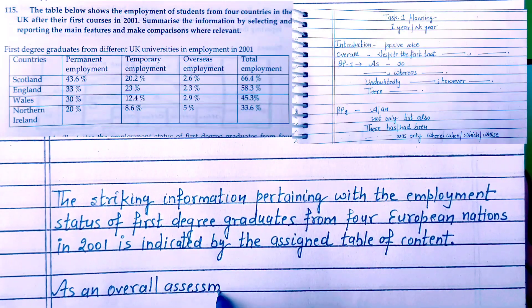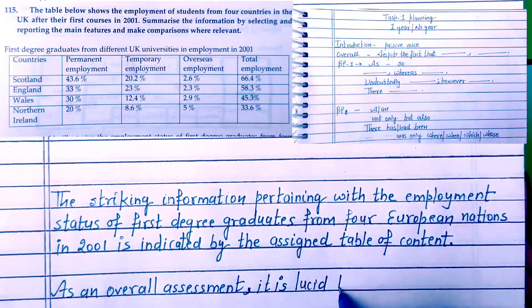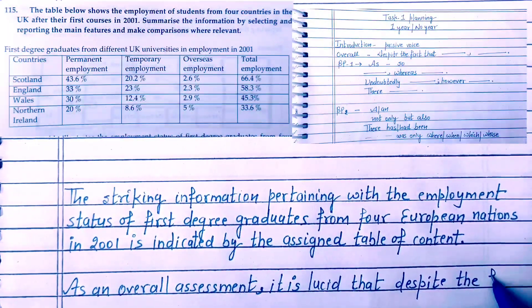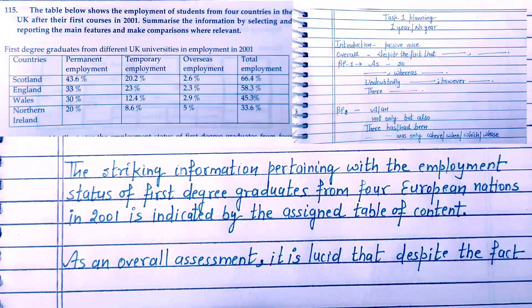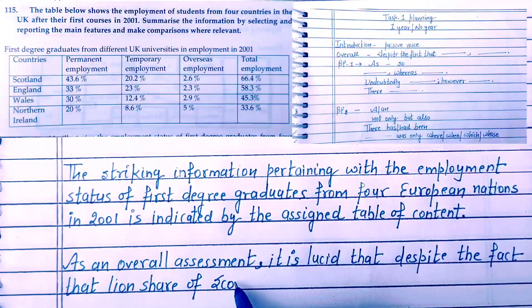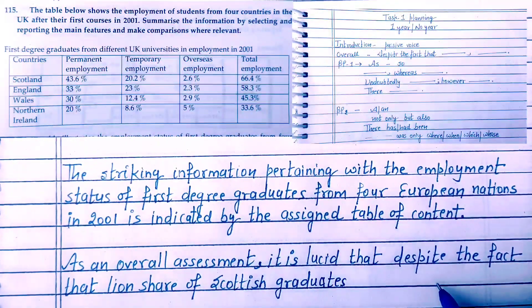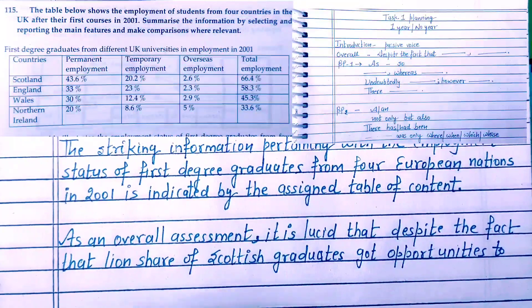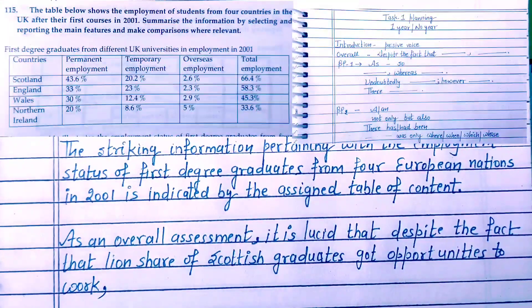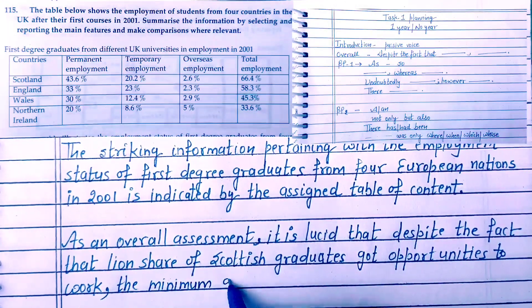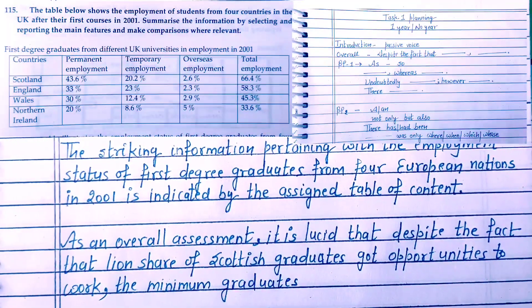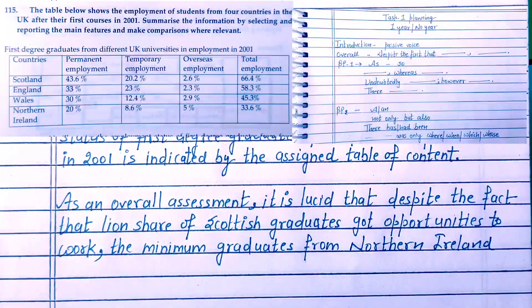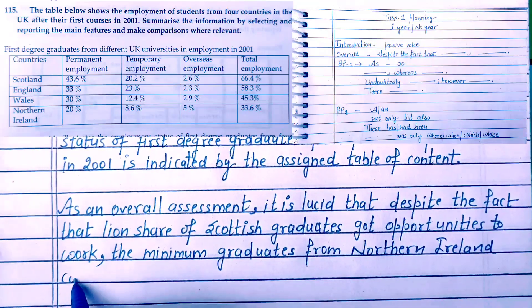As an overall assessment, it is lucid that, despite the fact that the loyal share — meaning maximum proportion — of Scottish graduates had the highest employment, the minimum graduates from Northern Ireland could get jobs in the given year. So this is how I compared the highest proportion of the chart with the lowest by using the 'despite' sentence structure.